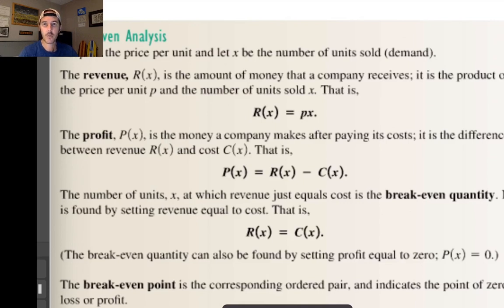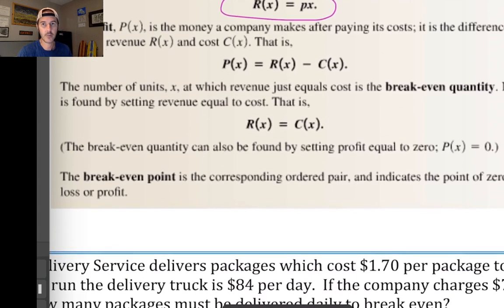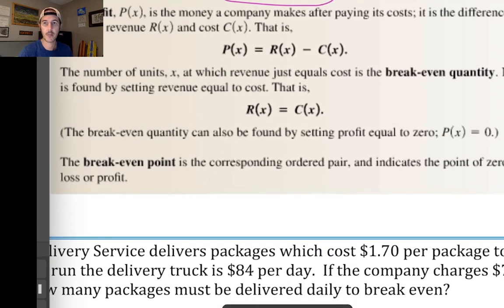And revenue, here we're being told r of x, which is this equation here, is found by taking the price per unit and multiplying it by the number of units sold. And the cost function is going to be something that's very specific. Maybe it's going to be a fixed number. If I know that the only thing I'm doing is paying for a P.O. box in order to run my business, well, that number is going to be the same every year or on a monthly basis.